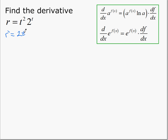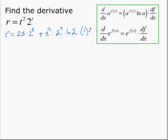So the derivative: 2t — derivative of the first — keep the second, 2 to the t, plus keep the first, multiplied by the derivative of the second. The derivative of 2 to the power of t is 2 to the power of t, times the natural log of the base, multiplied by the derivative of the exponent, which here is 1, but we'll show it just for completeness.